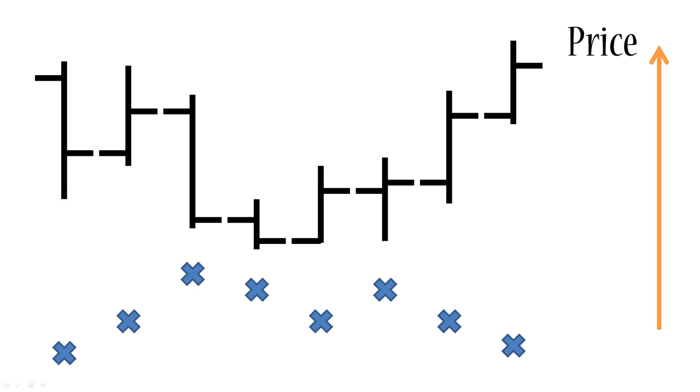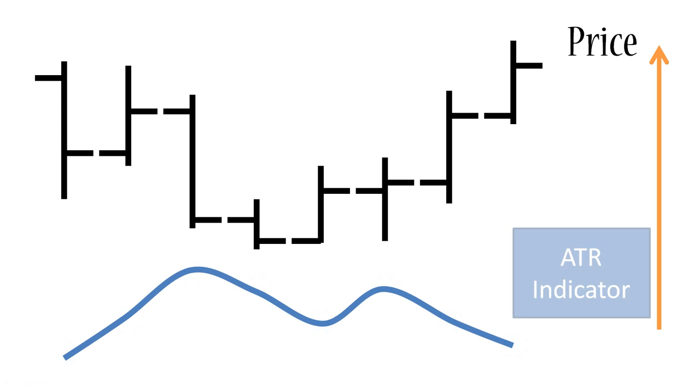So now what we're going to do is we're going to connect the crosses with a line and that's what it looks like. So now what we've actually constructed is the average true range indicator with a period of four. You can actually find this indicator in MetaTrader 4, drag it onto your chart and you'll see exactly this picture.